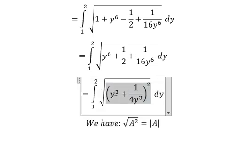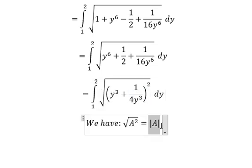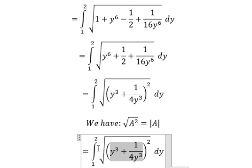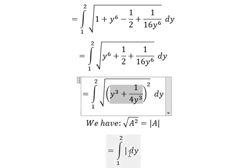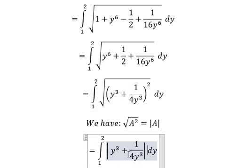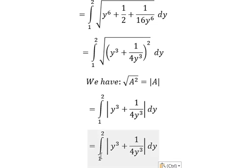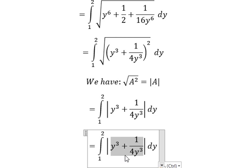So we change this into the absolute value of 8, and we have like this. If we look carefully, for y between 1 and 2, the expression inside the absolute value is always a positive number, so we can remove the absolute value here.